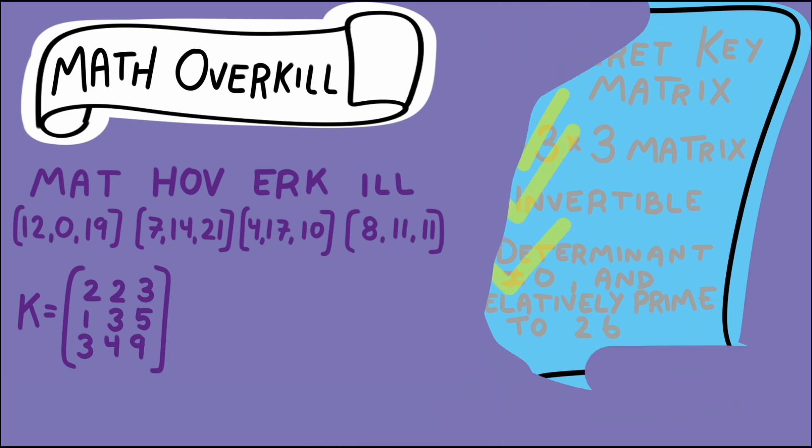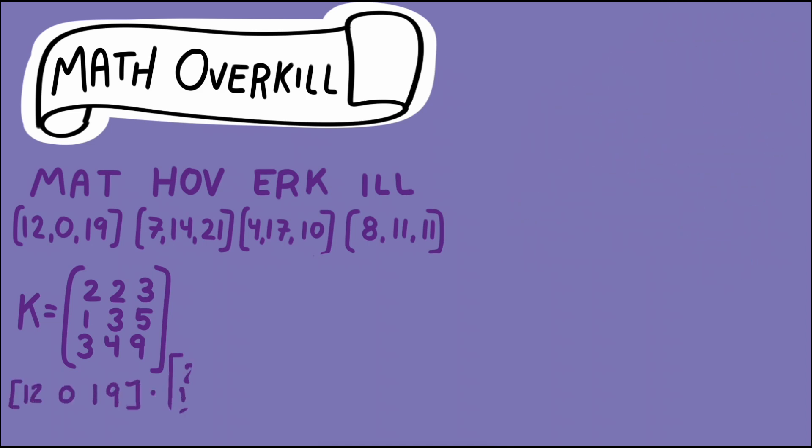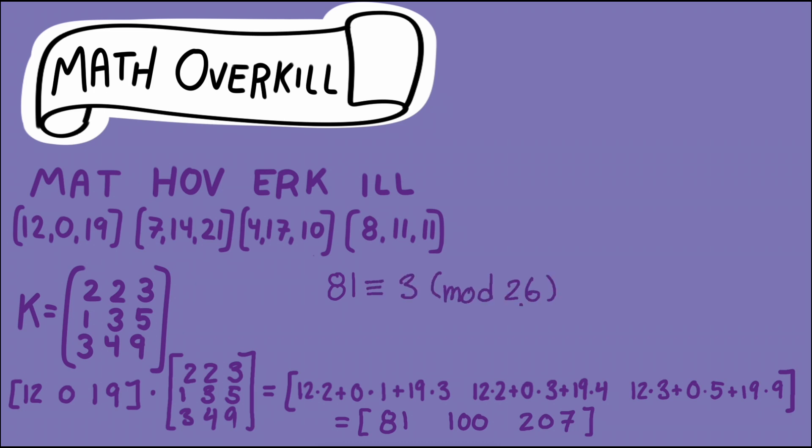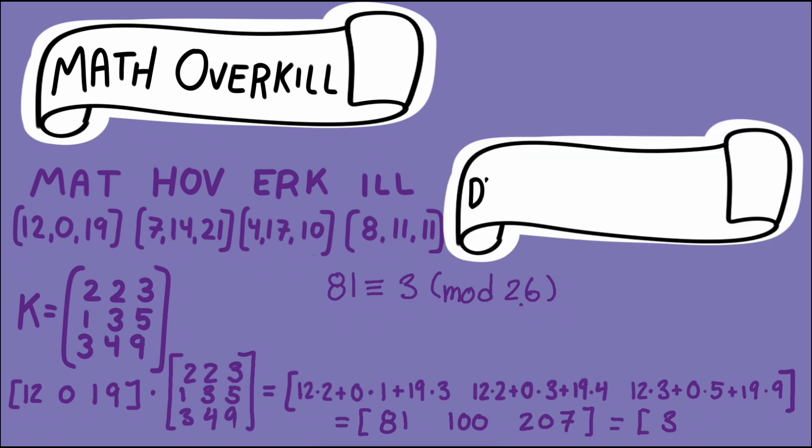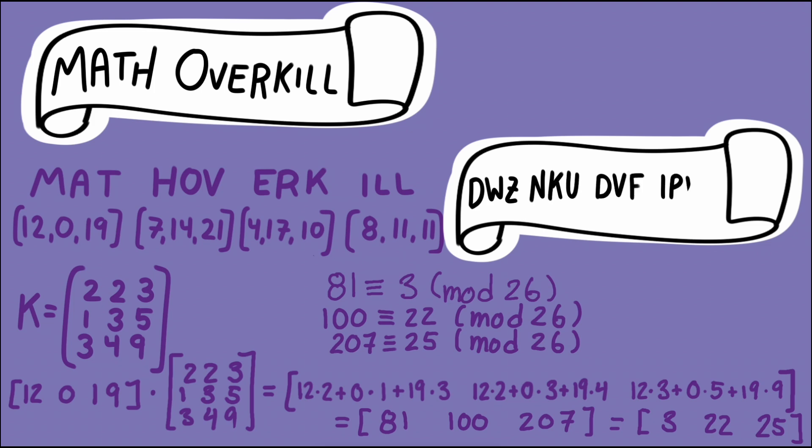We can now use our secret key to encrypt our blocks. The encryption is done by multiplying the block or vector by the key matrix. This is where our modular tool comes into play. We don't have a letter associated with the number 81 but if we do our arithmetic mod 26 then we get that 81 is congruent to 3 which is interpreted as the letter d. So mat is encrypted to dwz.